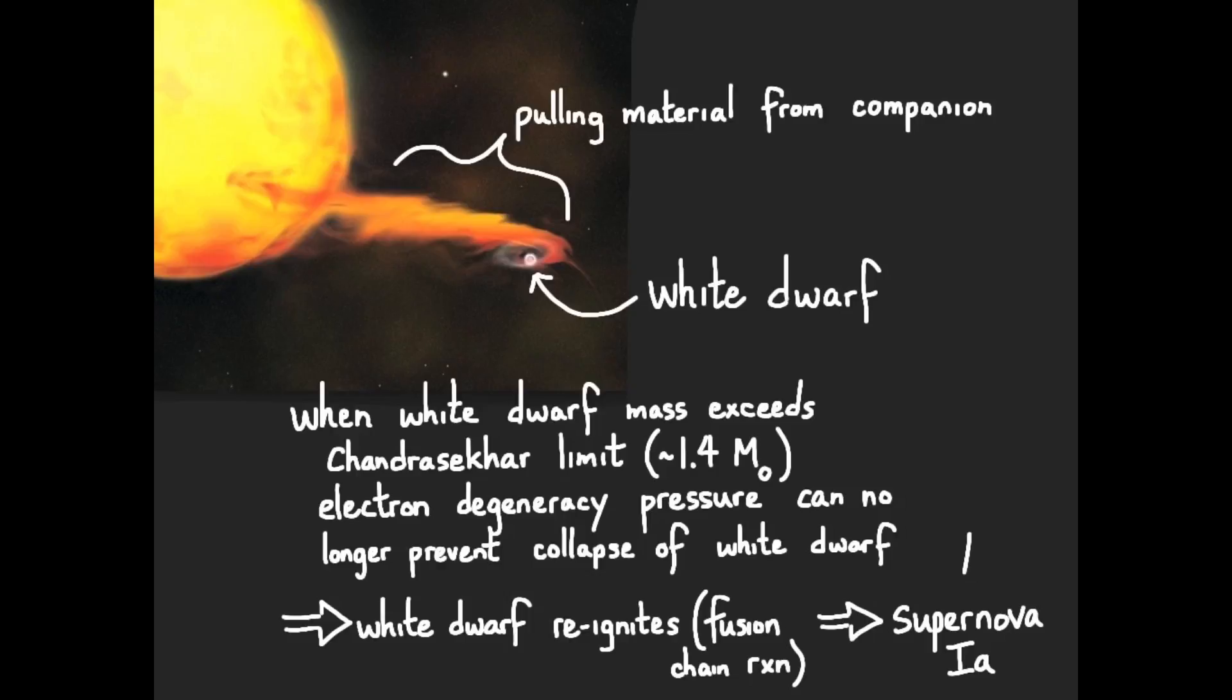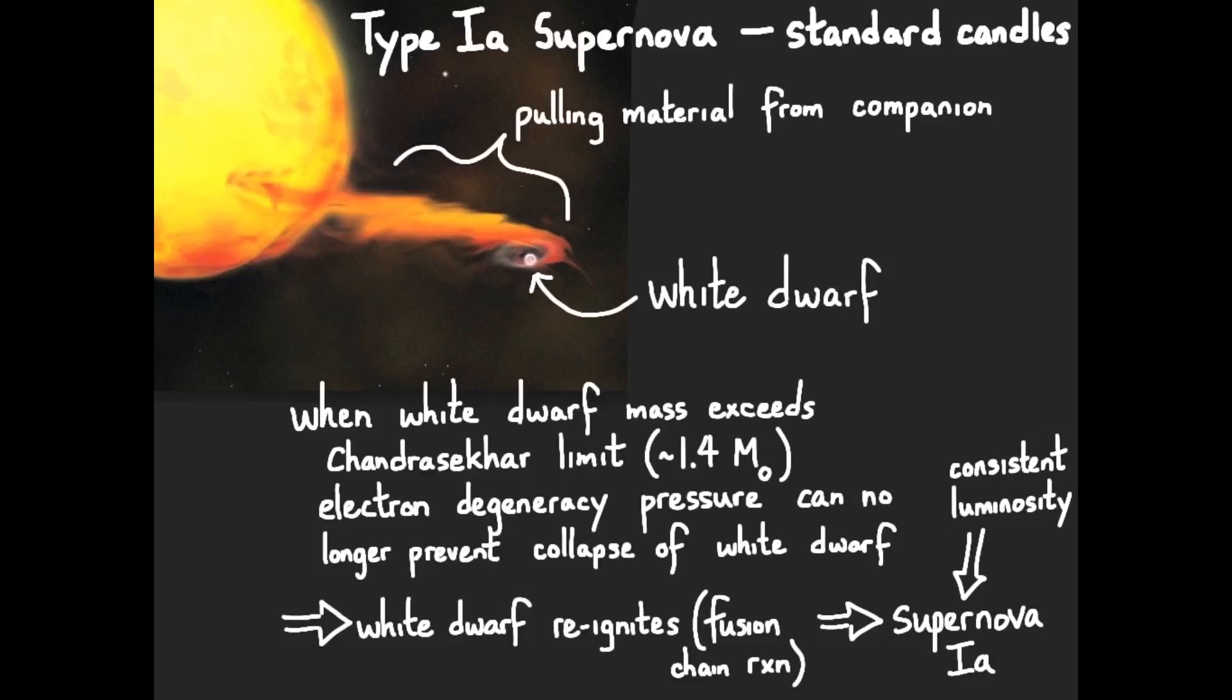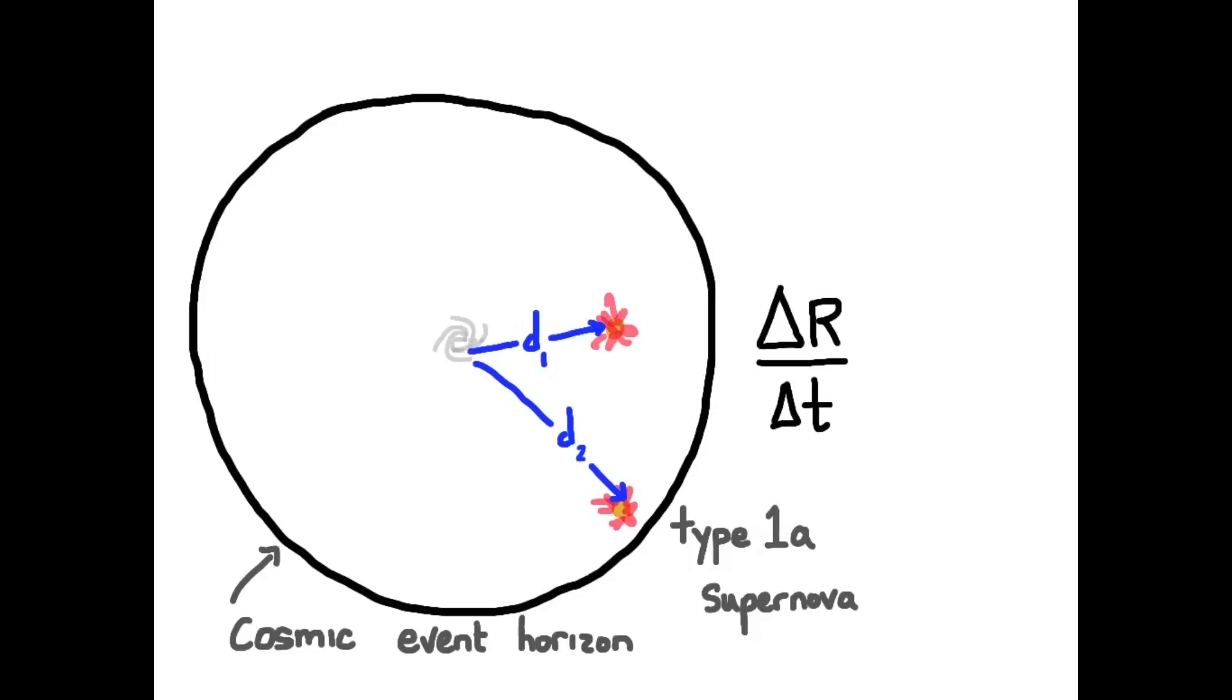Because of its very specific mass, about 1.4 solar masses, the supernova gives off a very consistent power, a consistent luminosity. And that's what makes it very useful as a standard candle. We know its luminosity, we can measure its brightness, and therefore we can determine the distance to that type 1a supernova.